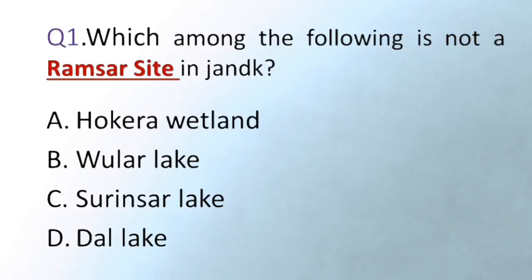Our first question is: which among the following is not a Ramsar site in J&K? Option A is Hokara Wetland, B Volo Lake, C Surizar Lake, D Dal Lake. The correct answer is Dal Lake — Dal Lake doesn't come under the Ramsar Convention of 1971.